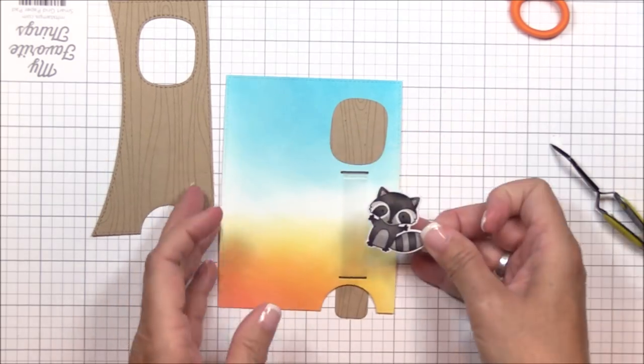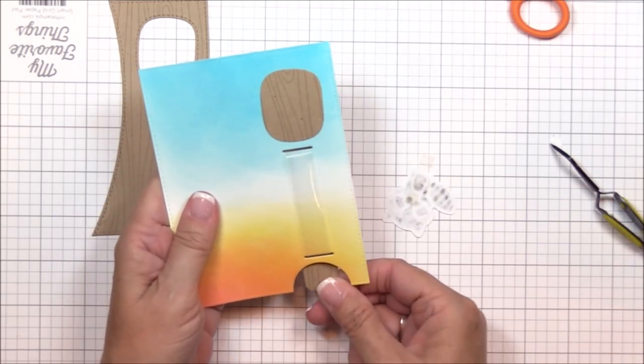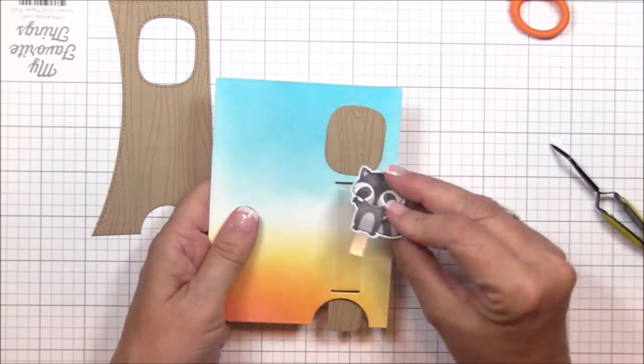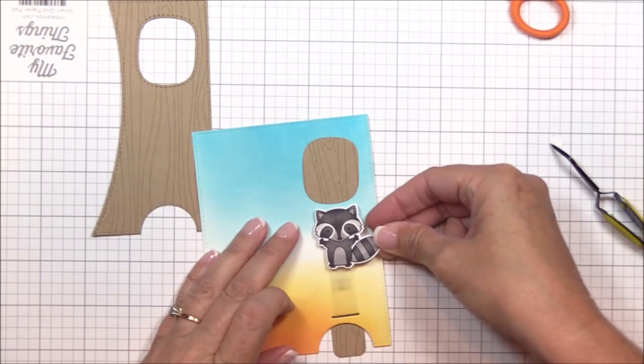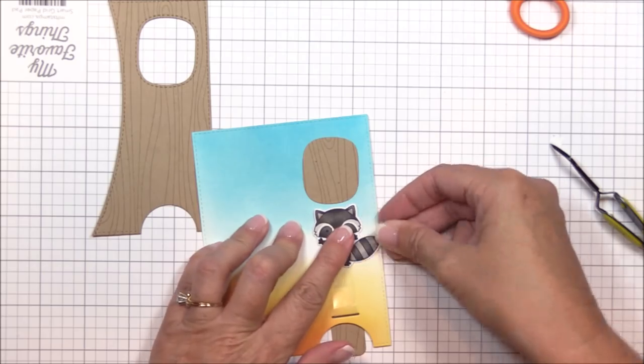Before attaching the raccoon, make sure that the pull tab is pushed up as far as it will go, and position the top of the raccoon's head just below the top slot. This will assure that the raccoon is completely hidden until you pull down on that pull tab.